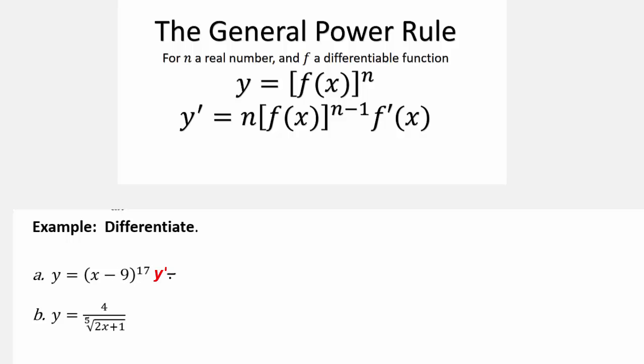So this is going to be 17 times what? x minus 9 to the 16th, and I'm going to write that. You don't have to write this part, but just so everybody realizes there is something else happening here. Times the derivative of x minus 9.